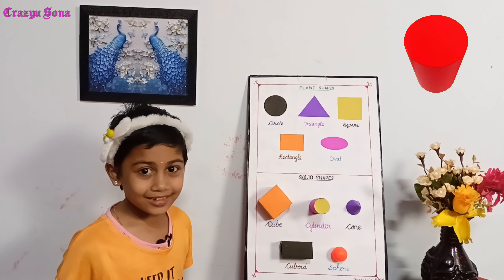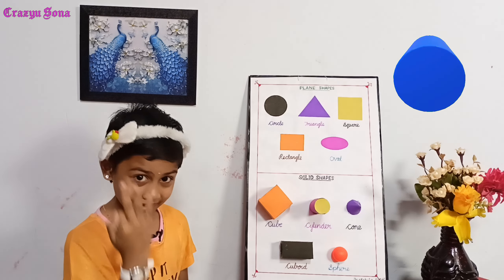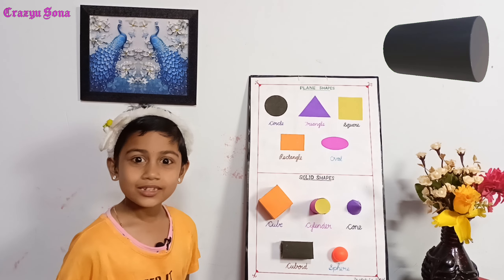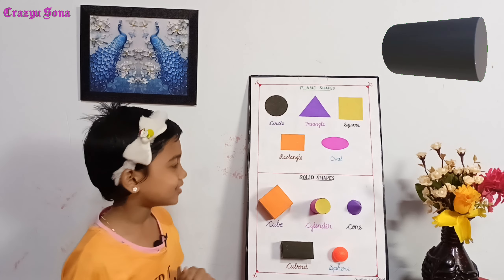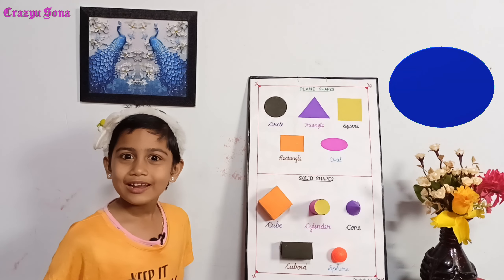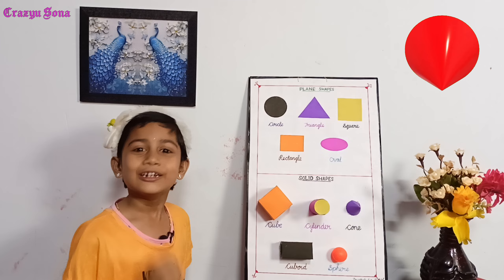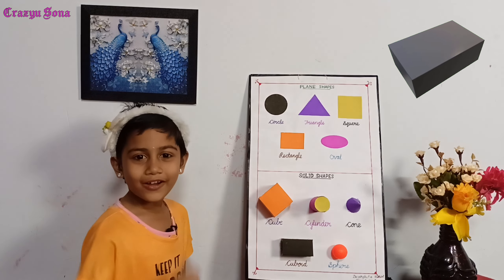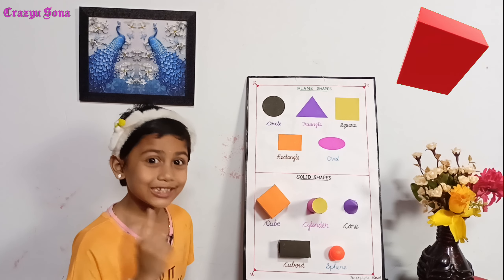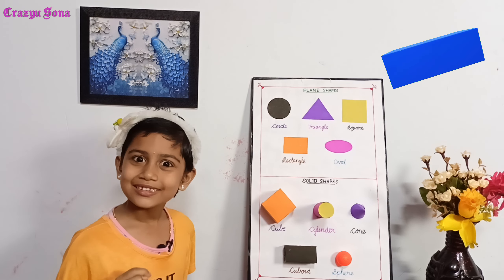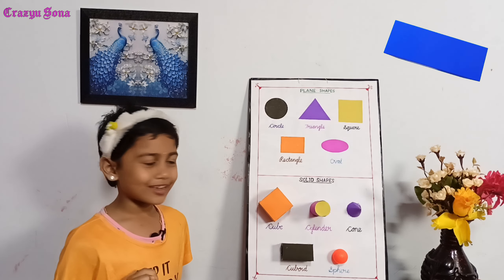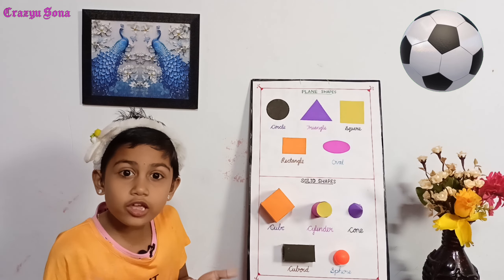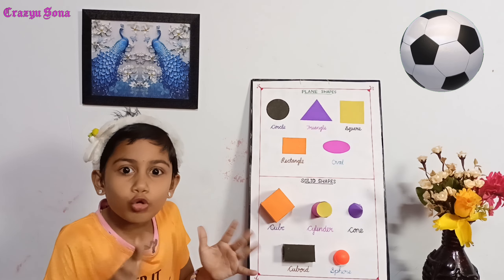Cylinder — cylinder has three faces, two edges, and no corners. Cone — cone has two faces, one edge, and one corner. Cuboid — cuboid has six faces, twelve edges, and eight corners. Sphere — sphere has no edges and no corners.